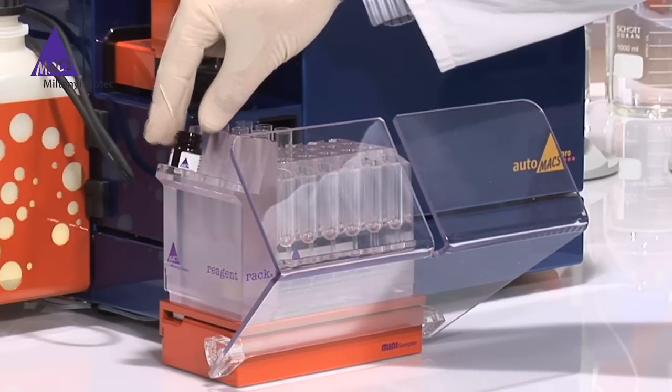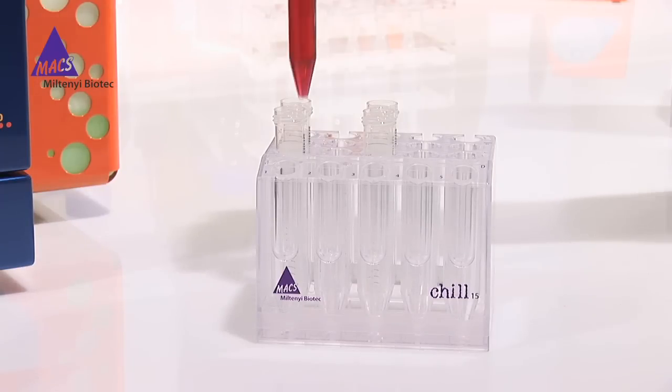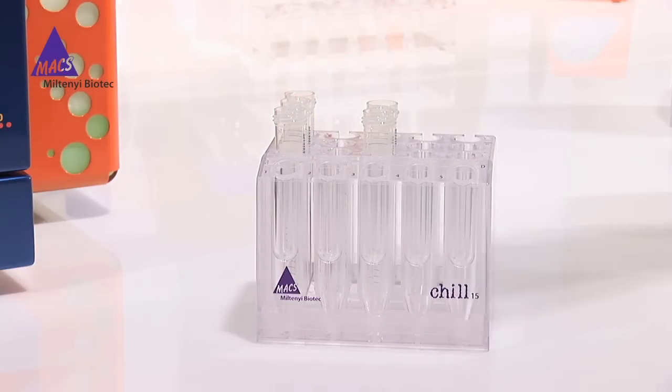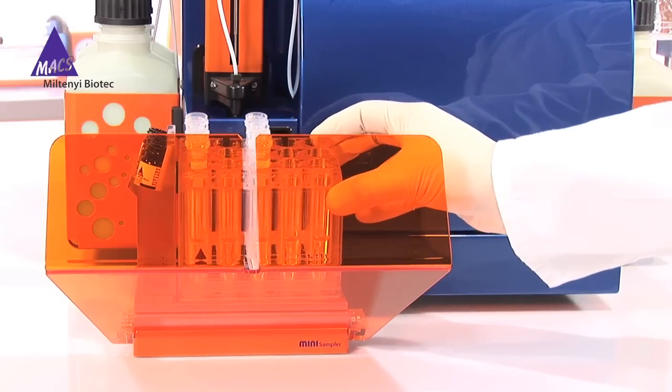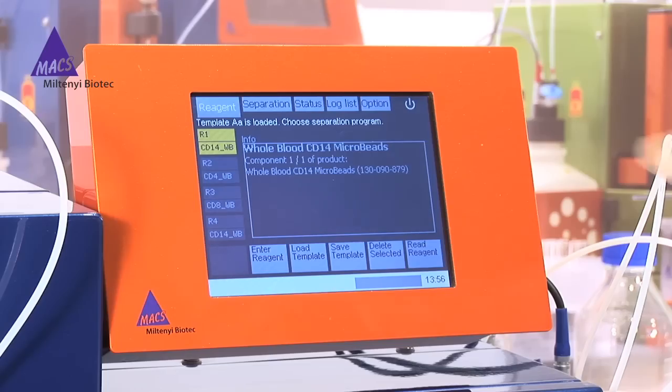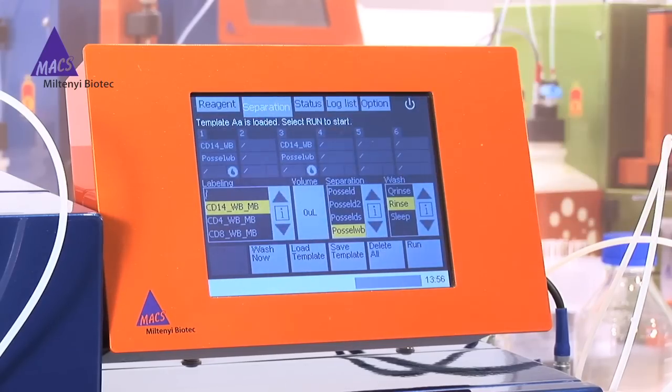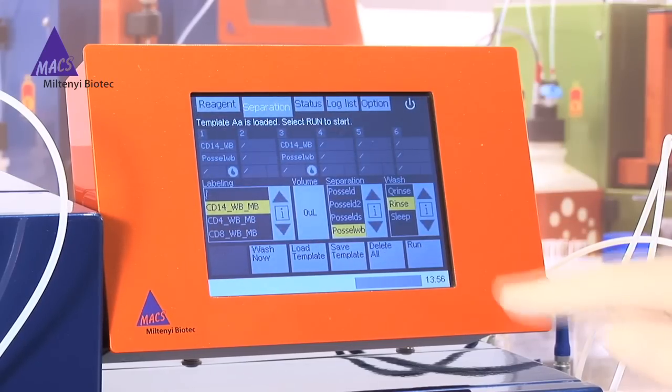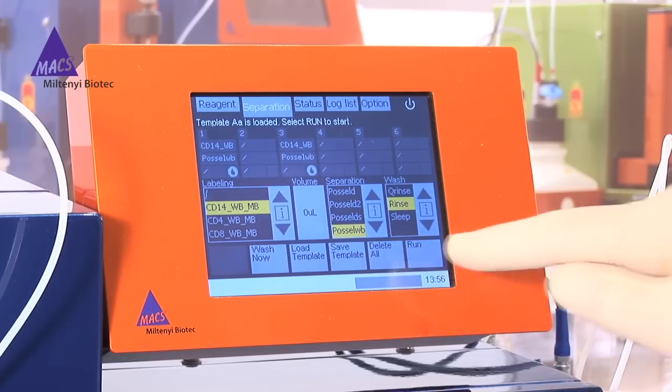Second, place your whole blood samples on the chill rack and designate the separation sequence. The instrument will handle labeling and select the best separation protocol and wash program. Third, press run to start walkaway cell separation.